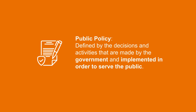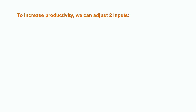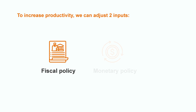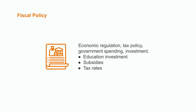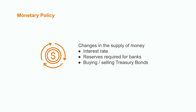Public policy is defined by the decisions and activities that are made by the government and implemented in order to serve the public. This involves a key role from the public sector, because the government can act as a coordinator when an economy or industry faces imbalances. There are two main types of public policy: fiscal policy and monetary policy. Fiscal policy involves economic regulation, tax policy, and government spending. These decisions can have an effect on long-term growth by influencing the decisions that people and businesses make, and this also includes investments such as education, healthcare, or infrastructure.